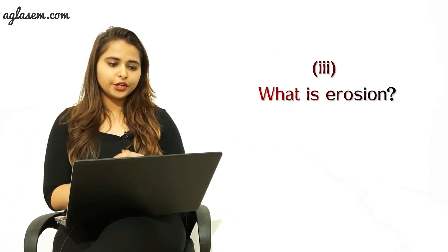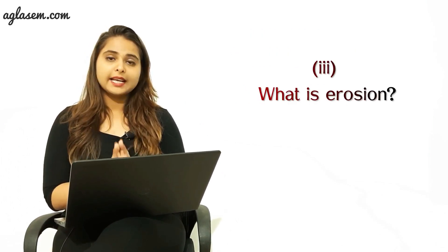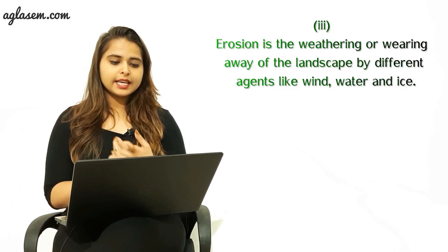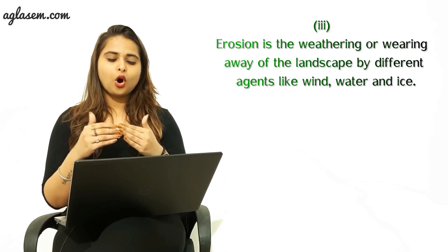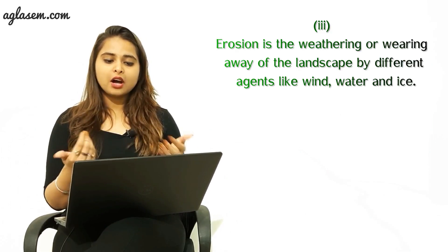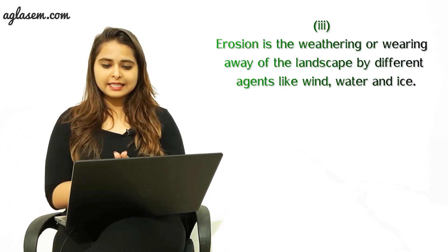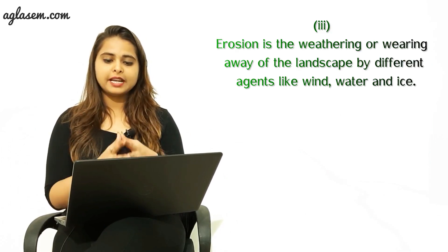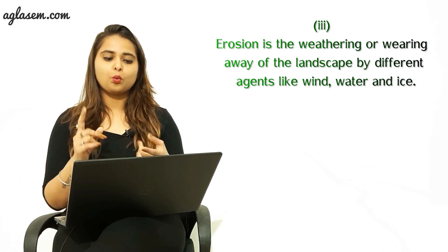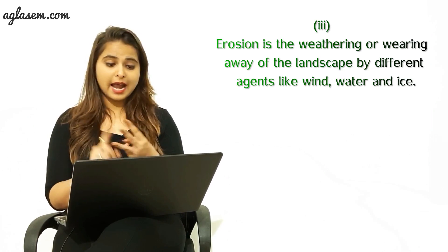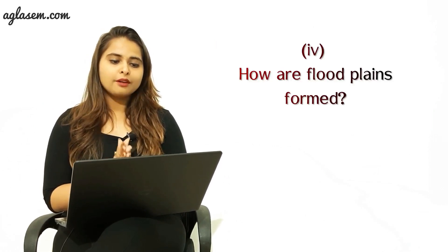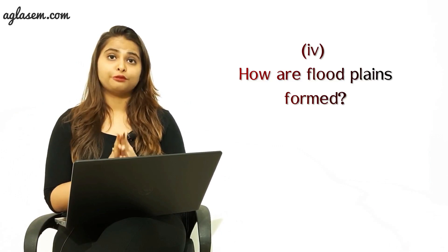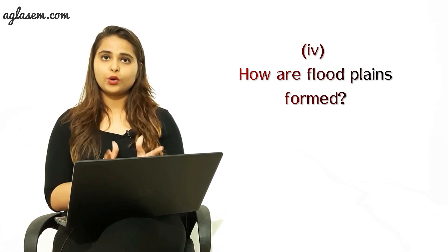The third part: what is erosion? The answer is: erosion is the weathering or wearing away of the landscape by different agents like wind, water, and ice.